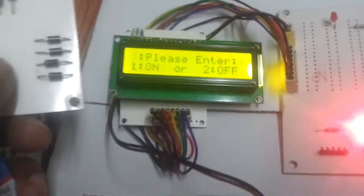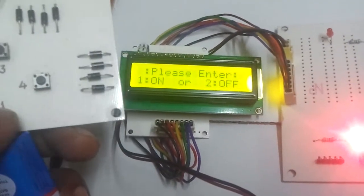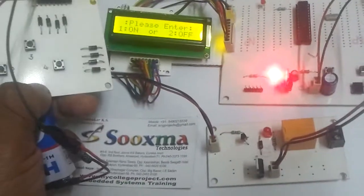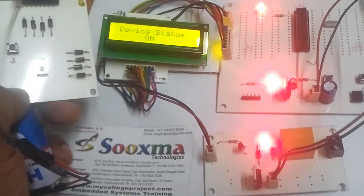Now to power on this relay, we have to press 1 for on and 2 for off. Let me press 1 now. Now the relay got turned on.